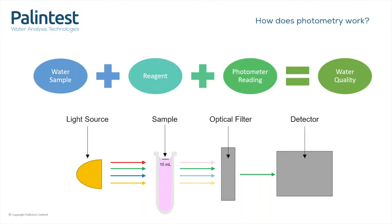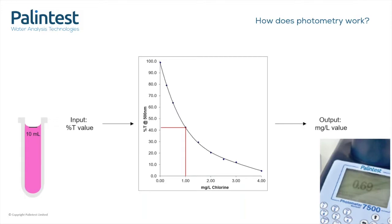The instrument measures the percent T through the sample in comparison to the blank. The blank is the sample without any reagents in it. Light passing through a glass tube of water will behave very differently to light passing through air, and that's why it's important to use a reagent-free sample as a blank. So, once we have the percent T, we need to convert it into something meaningful, something we want to use.